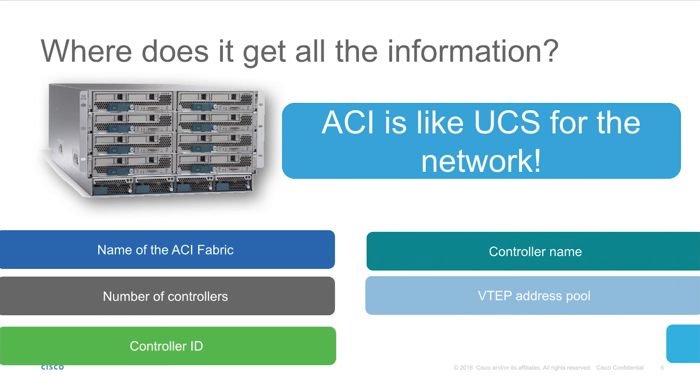Finally, the VTEP address pool. This is where we talk just a little bit about VXLAN. ACI is a VXLAN fabric overlay, which means a lot of things, but most notably you're not stuck with 4094 VLAN segments anymore. You can actually scale out to 16 million VXLAN segments. And the best part is you actually don't have to manage too much of it from an administrative point of view — the ACI fabric will handle it for you.